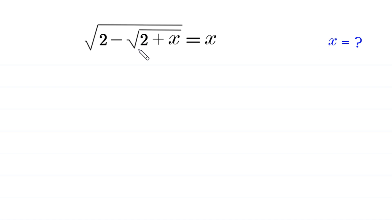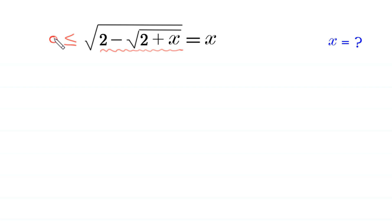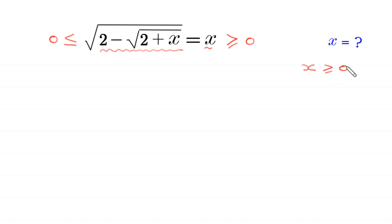Since this expression at the left hand side of this equation, 2 minus square root of 2 plus x, is under a square root, this must be greater than or equal to 0. And on the right hand side of this equation, x must be greater than or equal to 0.